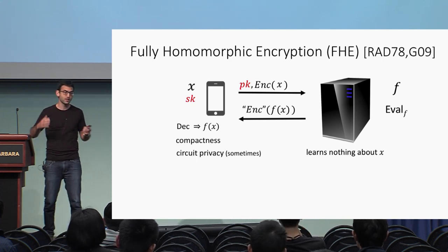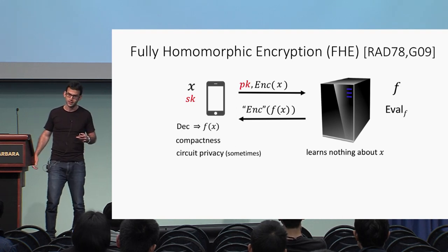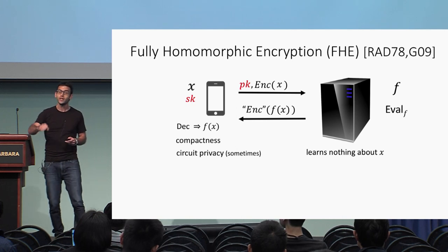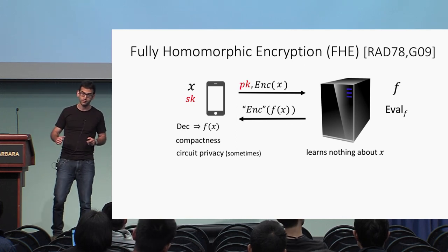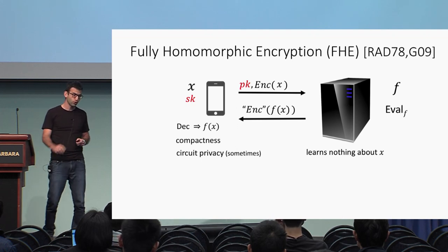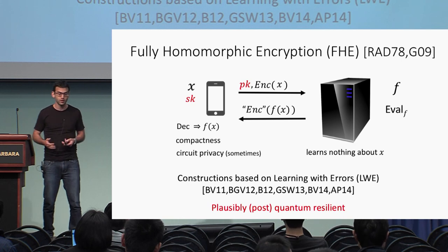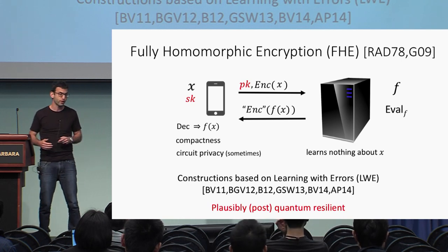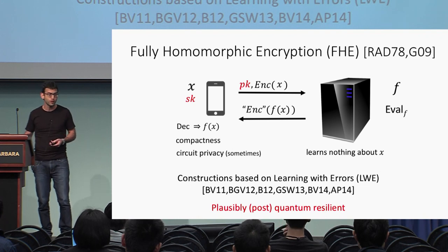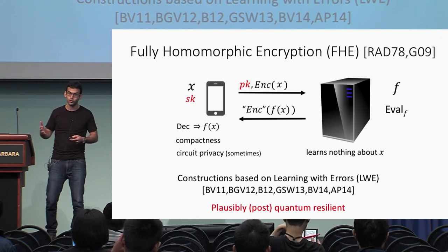Another property that is not always required but is important for this talk is called circuit privacy. For our purposes, circuit privacy means that the encryption of f of x really does need to look like a fresh encryption of f of x, and this should hold even for a computationally unbounded distinguisher. Homomorphic encryption schemes have been constructed based on the hardness of the learning with errors problem, and since this problem is considered intractable even for quantum computers, this gives a plausible post-quantum candidate for fully homomorphic encryption.